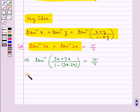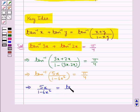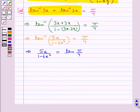So further, tan inverse 5x upon 1 minus 6x square is equal to pi by 4. Or you can say we have 5x upon 1 minus 6x square is equal to tan pi by 4. And we know that the value for tan pi by 4 is 1.